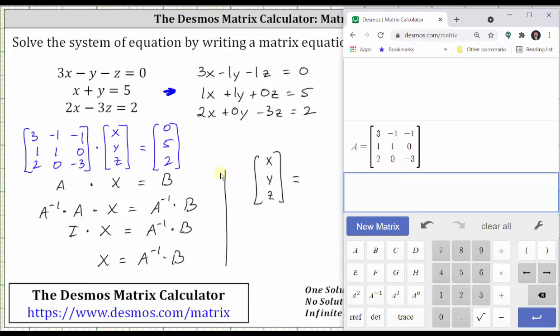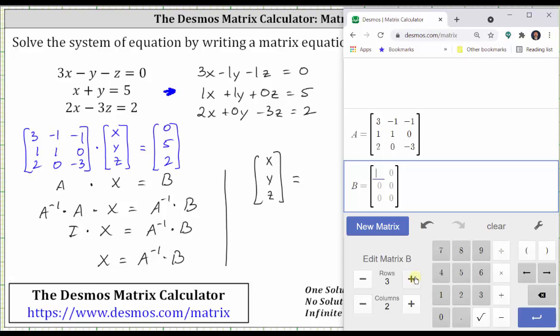Now let's enter matrix B, which is the constant matrix, which is a three by one matrix. Click new matrix, change the number of rows to three, number of columns to one, and enter the elements. Zero, right arrow, five, right arrow, two, enter.